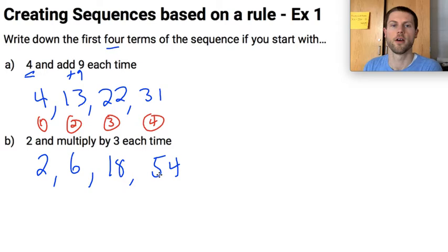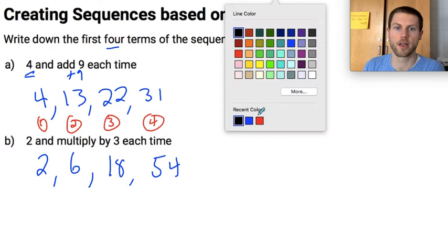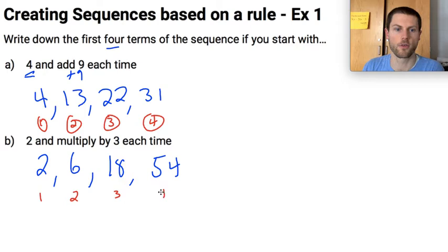But if it is, then that would be my fourth term. And again, I'm just going to list what these numbers are. So the first term, the second term, third term, and the fourth term. And just to make that association with this sequence. Both of these are sequences. They follow a specific rule.